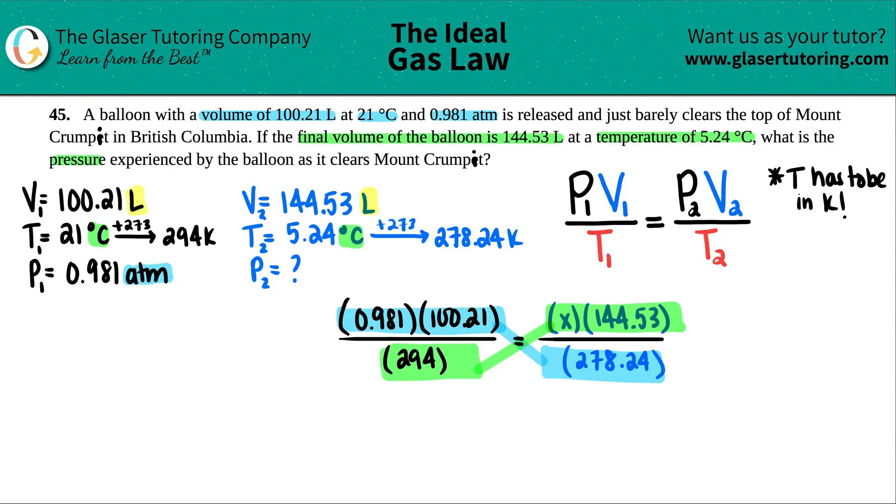When we do this part, try not to round as much because remember, we only round the final answer. So 0.981 times 100.21 times 278.24, I'm going to try to extend it as much as I can. So 27352.66422 equals 144.53 times 294. I get 42491.82, and that's now X.